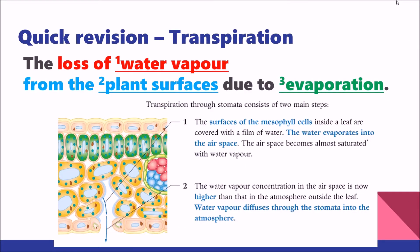From the definition of transpiration, there are three elements. The first element is the loss of water vapor, which is in gaseous state, from the plant surfaces. The water loss mainly takes place in the leaves, at the stomata. Water loss also takes place in the stem and the root, because for the root there is no cuticle — no waterproofing layer — to prevent water from escaping.